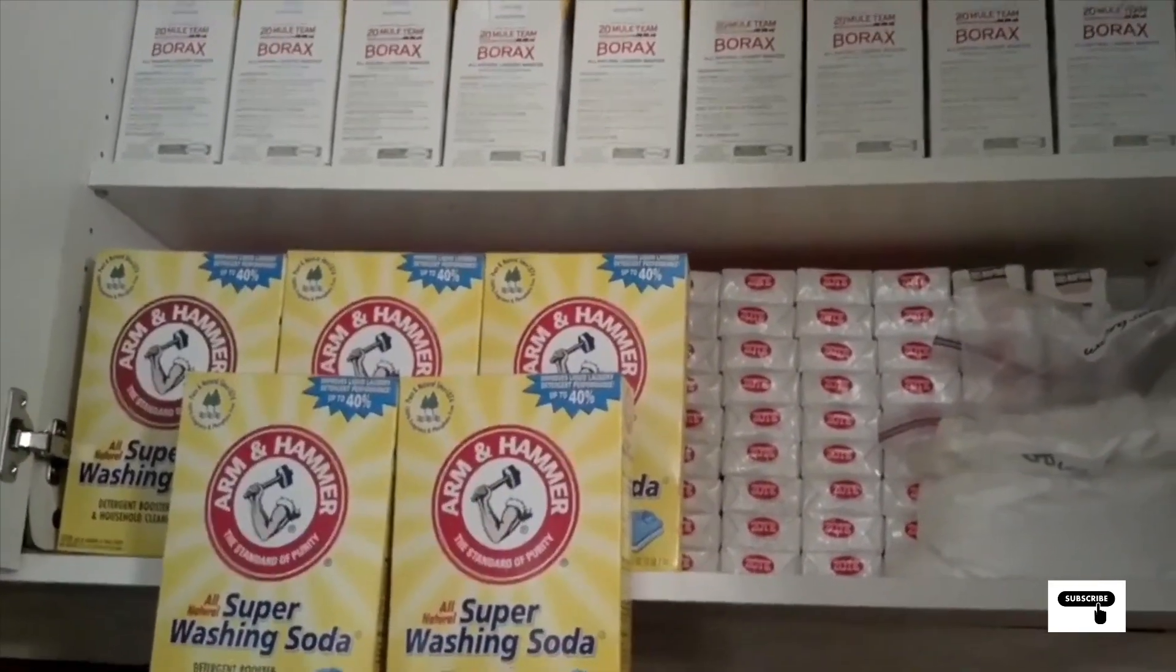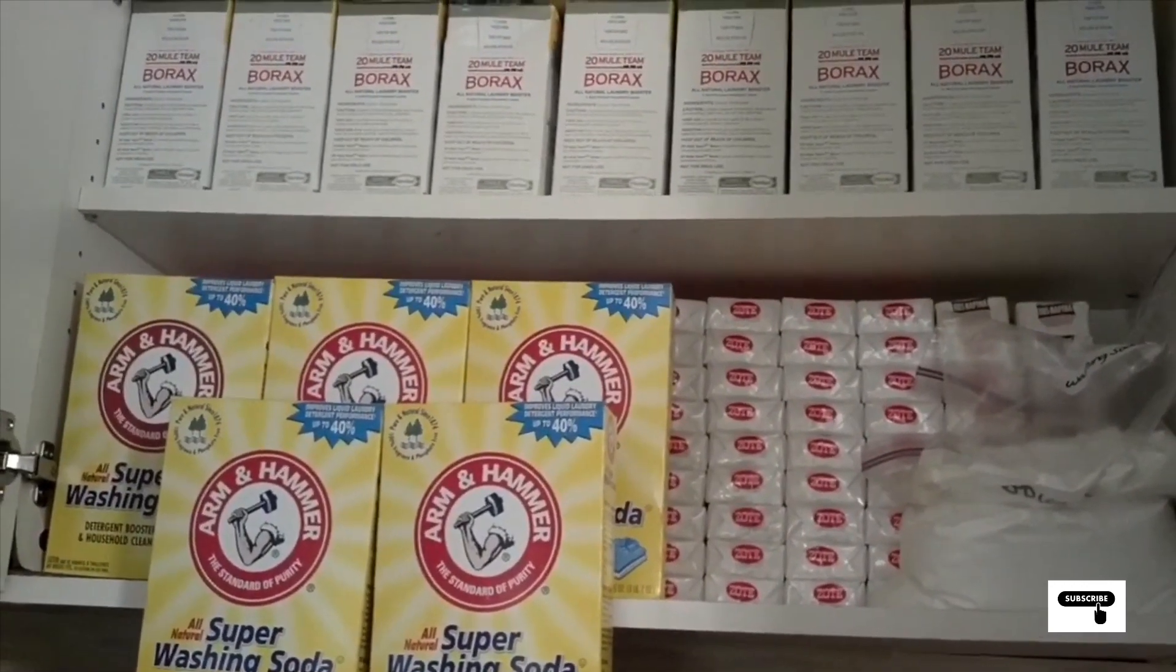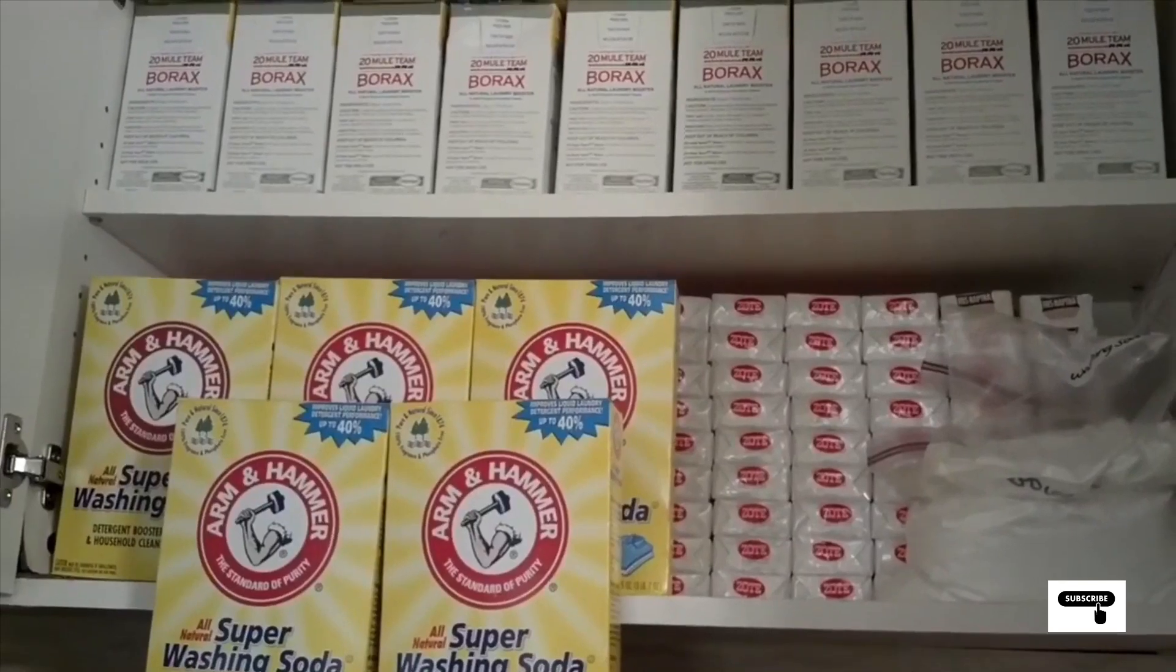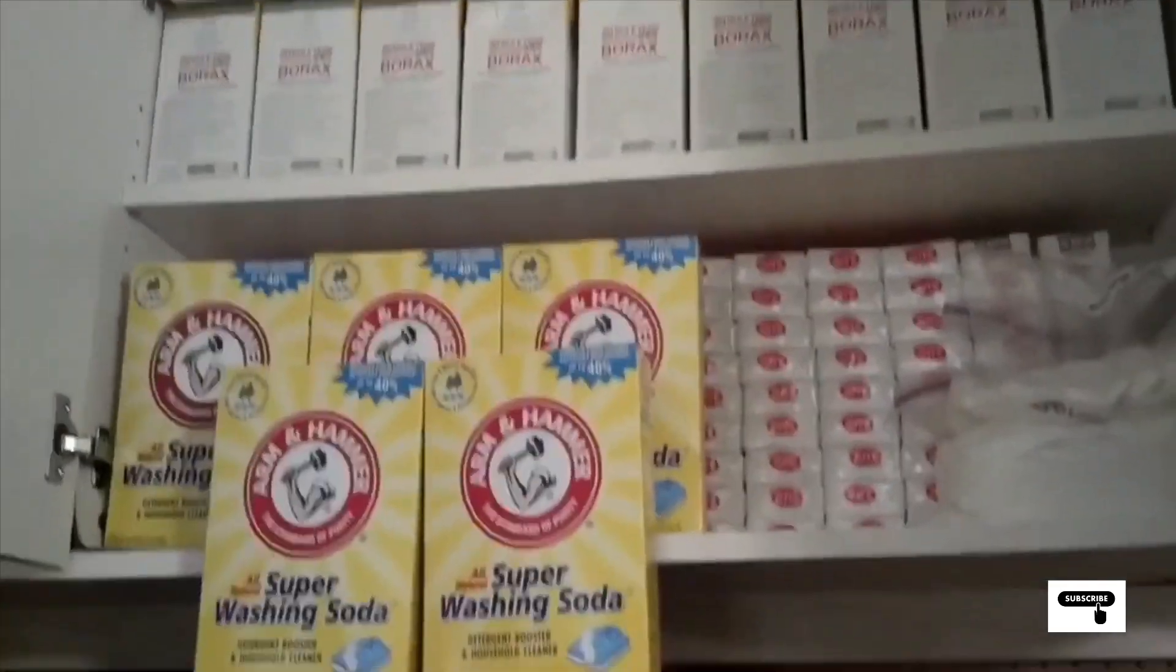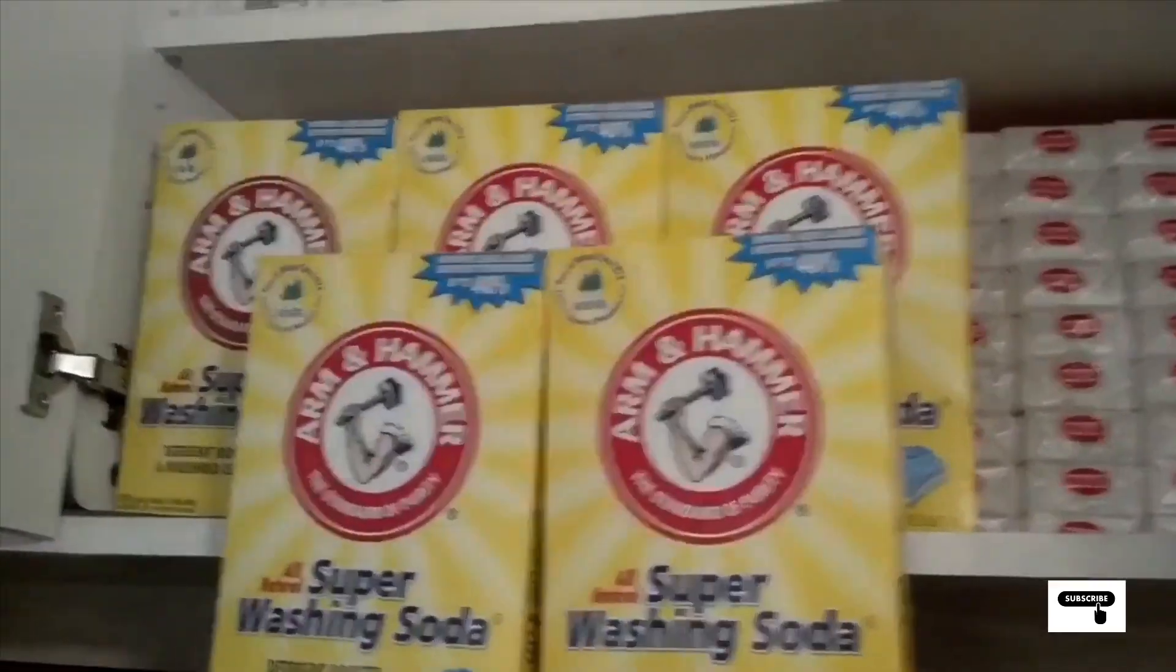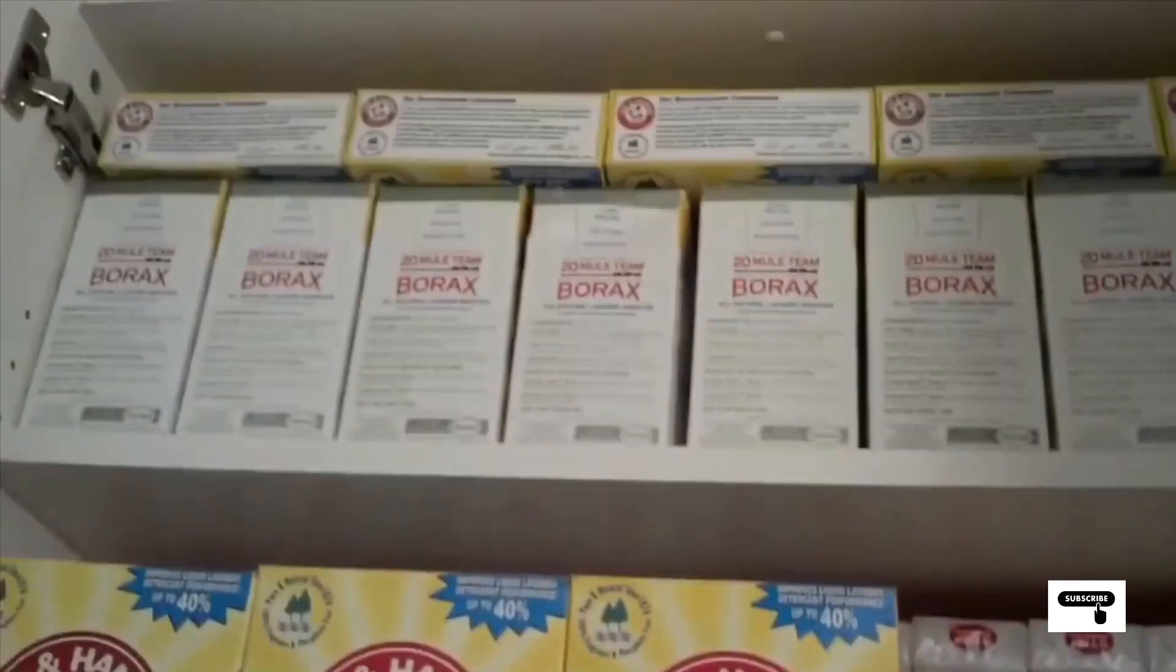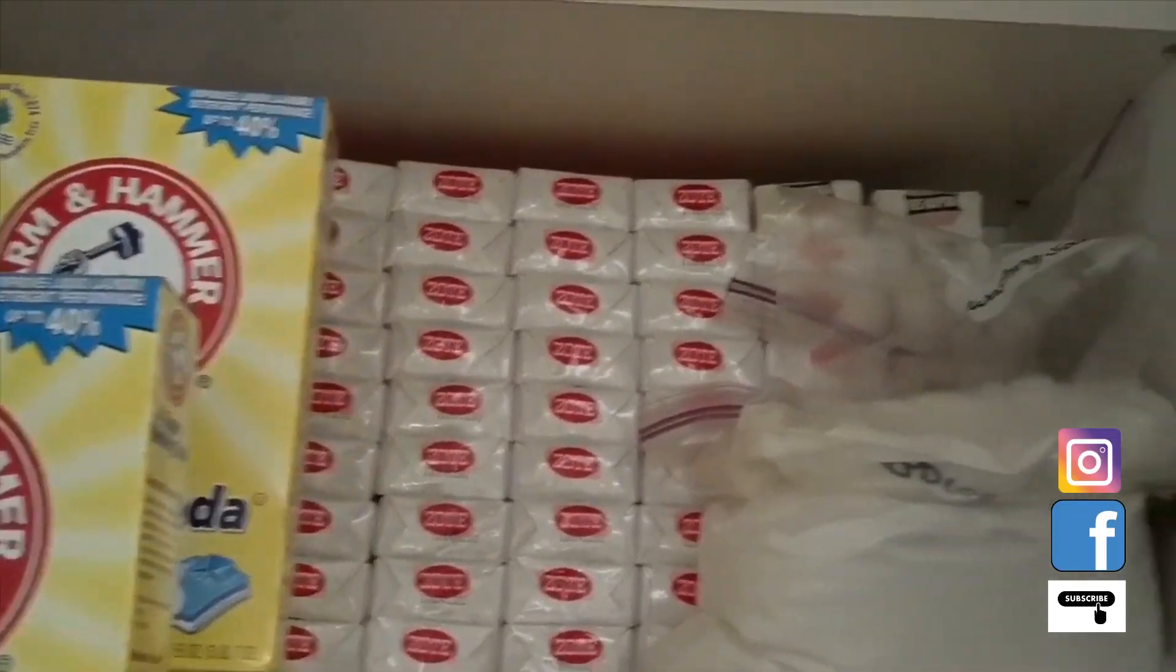I have Arm & Hammer's soda, the super washing soda. I have a lot of Zote soap back there, Fels-Naptha, and Borax. And as you look at these, you're like, wow, that's a lot. And it is. But I'm also looking at something that maybe I can barter with. So relatively inexpensive, I try to think about things that I can store out in my preps that one, helps my family, but then also something that I can barter with.